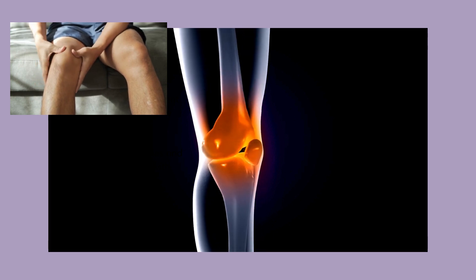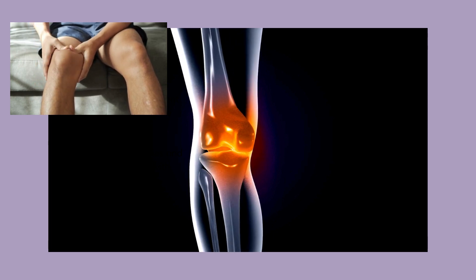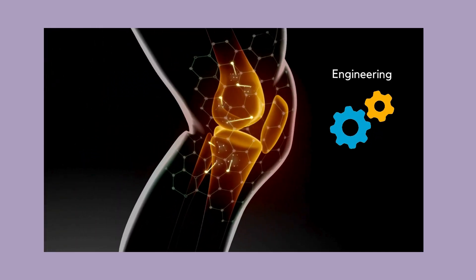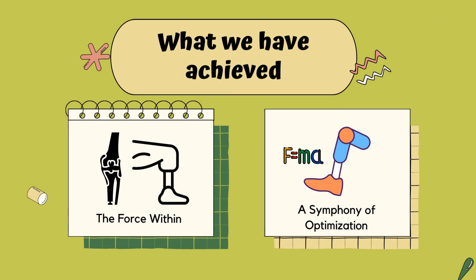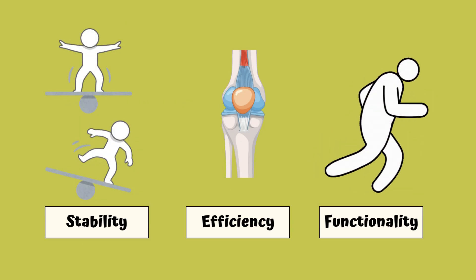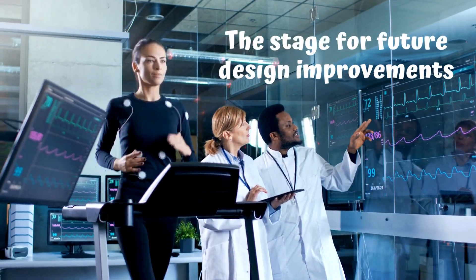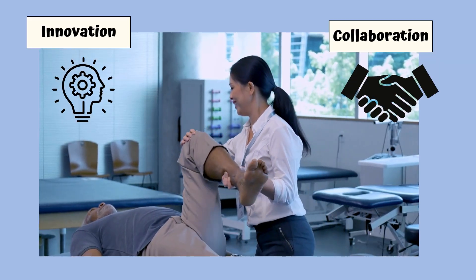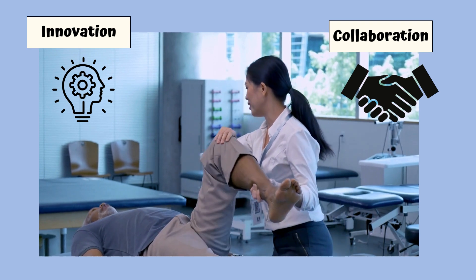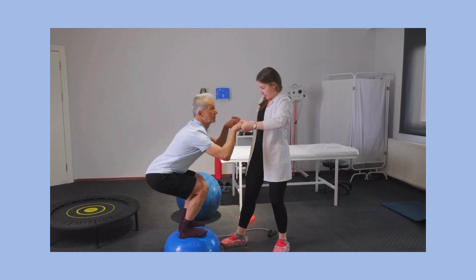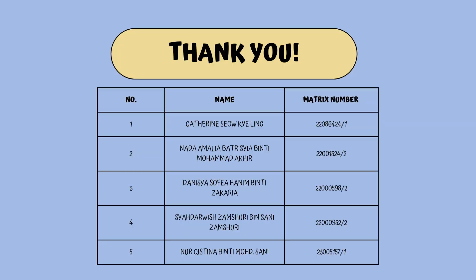In conclusion, our study into prosthetic knee functionality combines biomechanics, engineering, and human resilience. We analyzed the dynamic behavior of prosthetic knee joints, focusing on the four-bar linkage mechanism. Key findings emphasize the importance of kinematic and kinetic factors for stability, efficiency, and functionality, setting the stage for future design improvements. We invite innovation, collaboration, and boundary-pushing in prosthetic knee biomechanics, where the journey is as enriching as the destination. Thank you.